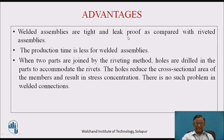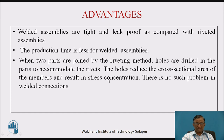Welded assemblies are tight and leak-proof, which is an important advantage compared with riveted assemblies, and that's why they are extensively used in pressure vessels. The production time is less for welded assemblies, so manufacturing is at a faster rate. In riveted joints, holes are required to be drilled to accommodate rivets, which reduces the cross-sectional area and results in stress concentration. Such a requirement is not there in welded joints.